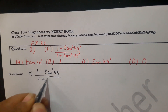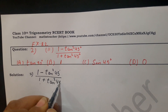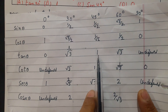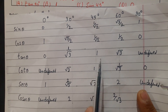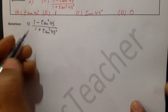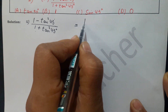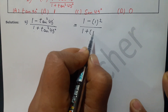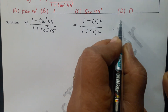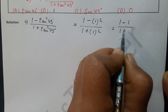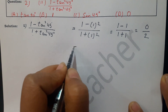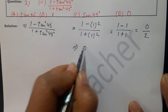So we have (1 - tan²45°) / (1 + tan²45°). tan45° is easy to remember — tan45° is 1, and cot45° is also 1. Putting tan45° = 1: we get (1 - 1²) / (1 + 1²) = (1 - 1) / (1 + 1). The numerator is 0 and denominator is 2, so 0 ÷ 2 = 0.